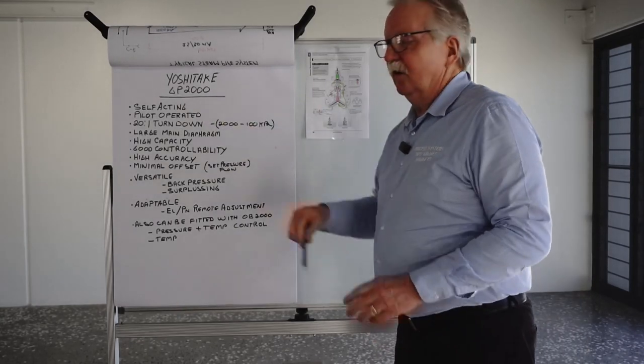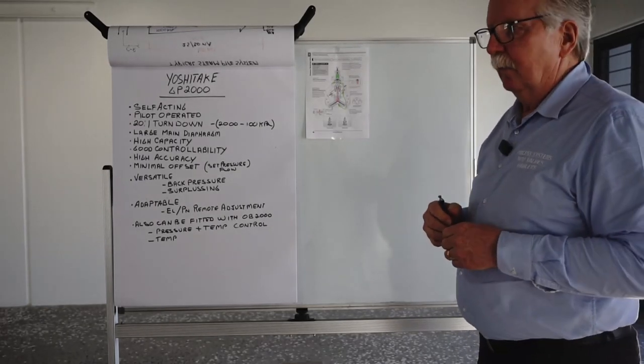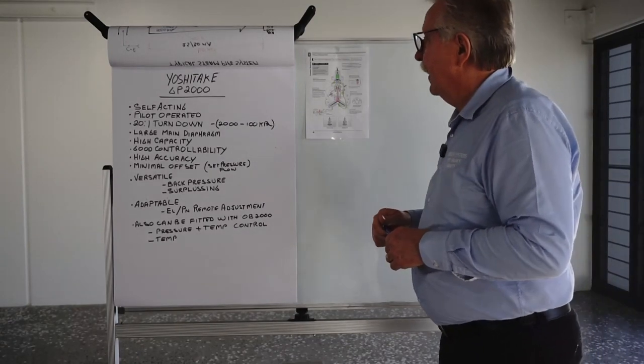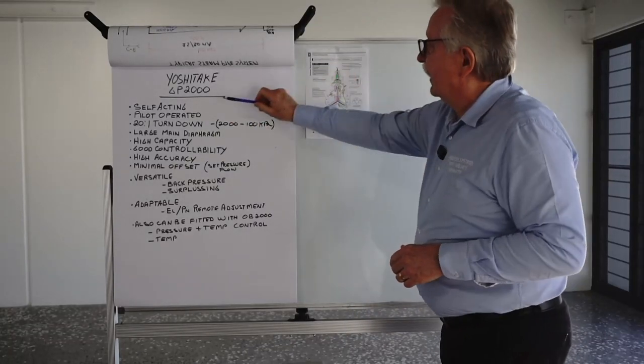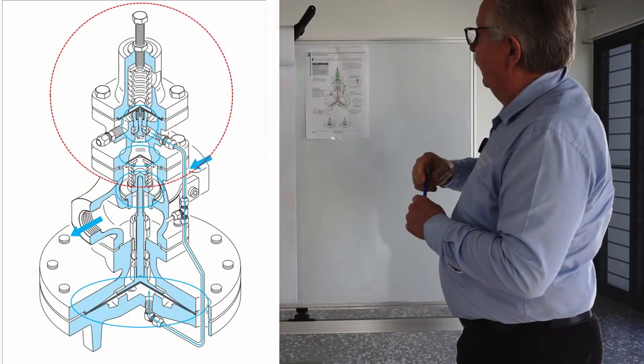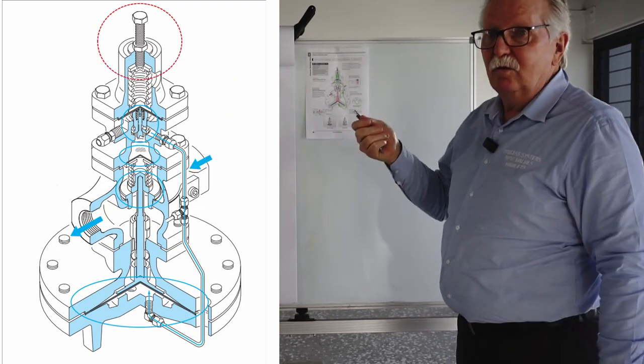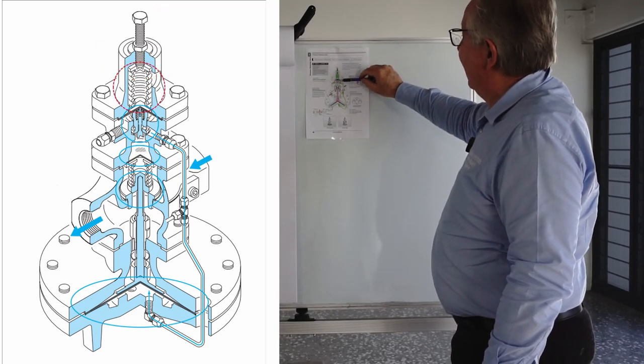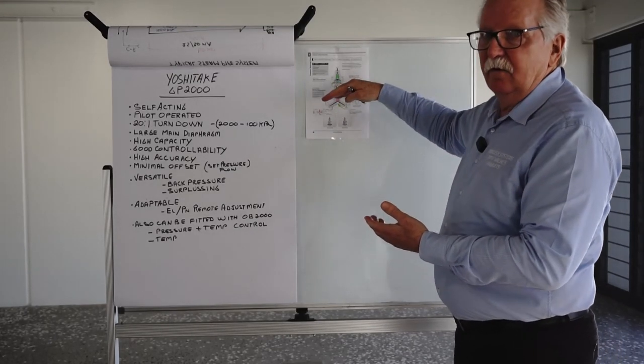The GP2000 is a self-acting unit. That means you don't need any external source of motivation either in pneumatics or electrics to get it to operate. It's pilot operated. Now the self-acting and the pilot operated can be identified in this area here of the pressure reducing valve. Basically there's an adjusting knob on the top which you use a spanner to adjust. And you adjust that against the spring tension. And that is how you will adjust your pressure up and down due to the way the valve operates.